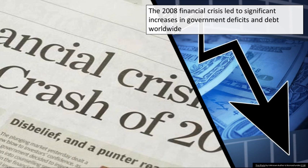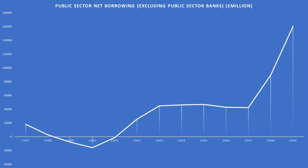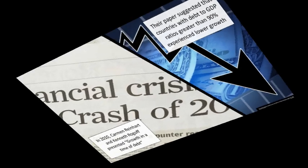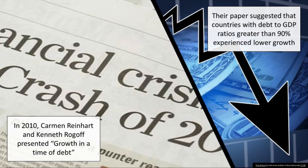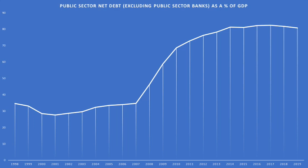The financial crisis of 2007-8 led to significant increases in deficits and debts of governments around the world. In 2010, Carmen Reinhart and Kenneth Rogoff presented 'Growth in a Time of Debt', which suggested that as debt increased — specifically if debt as a proportion of GDP went beyond 90% — there was a significant reduction of economic growth. This research was used by the coalition government in 2010 to implement an austerity regime, with the stated aim of preventing debt reaching that 90% debt-to-GDP threshold.